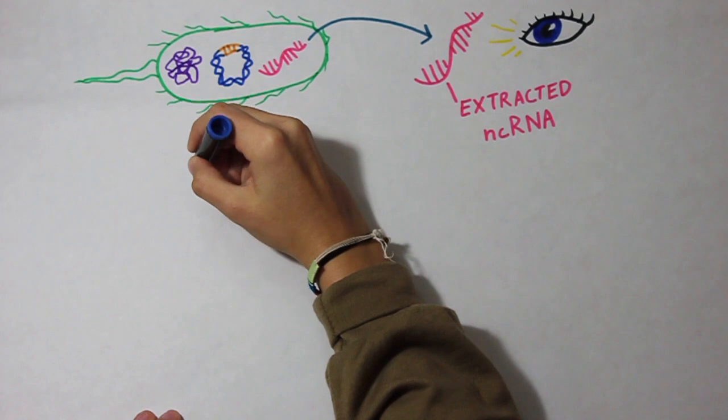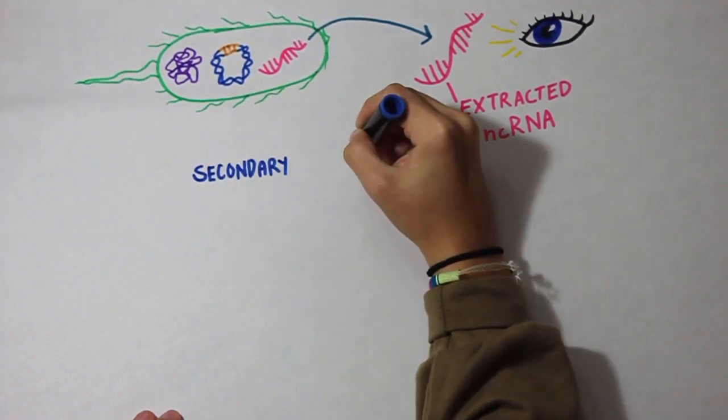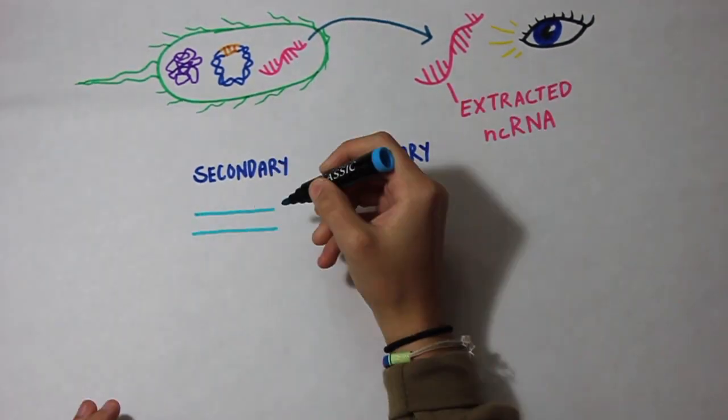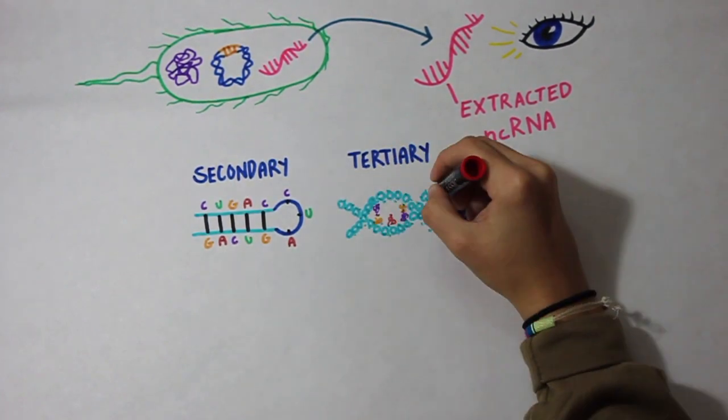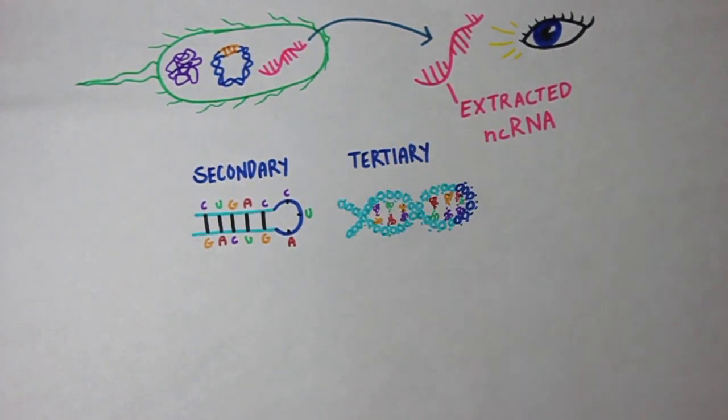There are two different ways nucleic acid structures are visualized, through secondary structures and tertiary structures. In creating tertiary structures, it is necessary to use secondary structures as a reference.